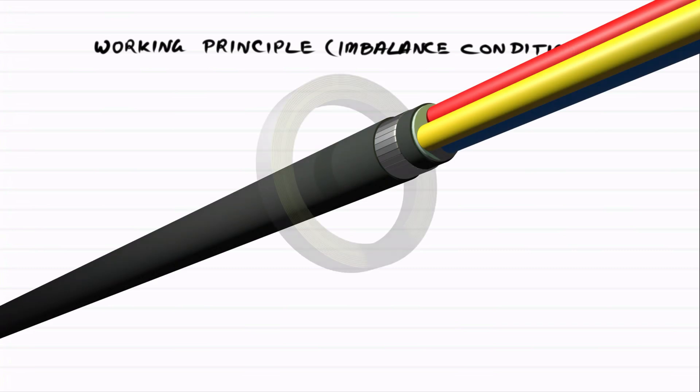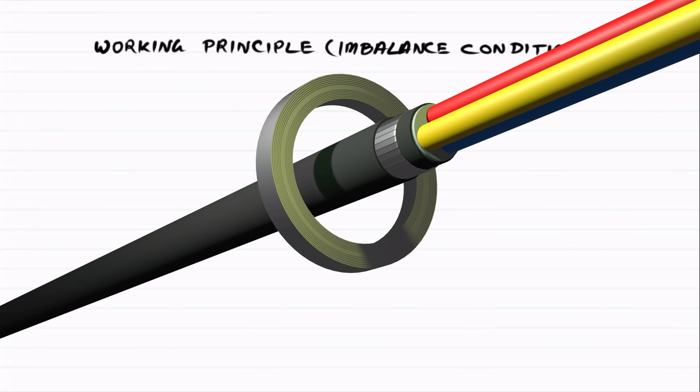Now imagine a ring-shaped core placed around the three cores of a cable. Each core carries current of one phase. In this condition, the net flux inside the CBCT core becomes zero, because the three currents add up to zero. Think of it this way.